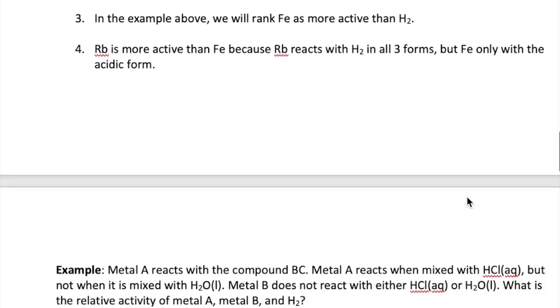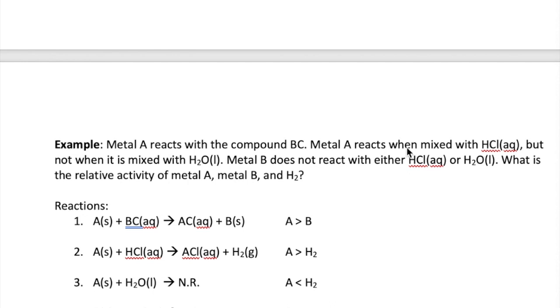Let's try out the idea that we just learned in the following example. Here we are asked to determine the relative activities of metal A, metal B, and H2 based on the observations given here. First, we were told that A reacts with BC. So we can write that reaction here, and based on that, we would say that A is more active than B. Secondly, A also reacts with HCl, but it doesn't react with liquid water. Since we're comparing activity of A versus H2, and it reacts with the acid form, we would say that A is more active than H2. This is the same idea that we discussed above.